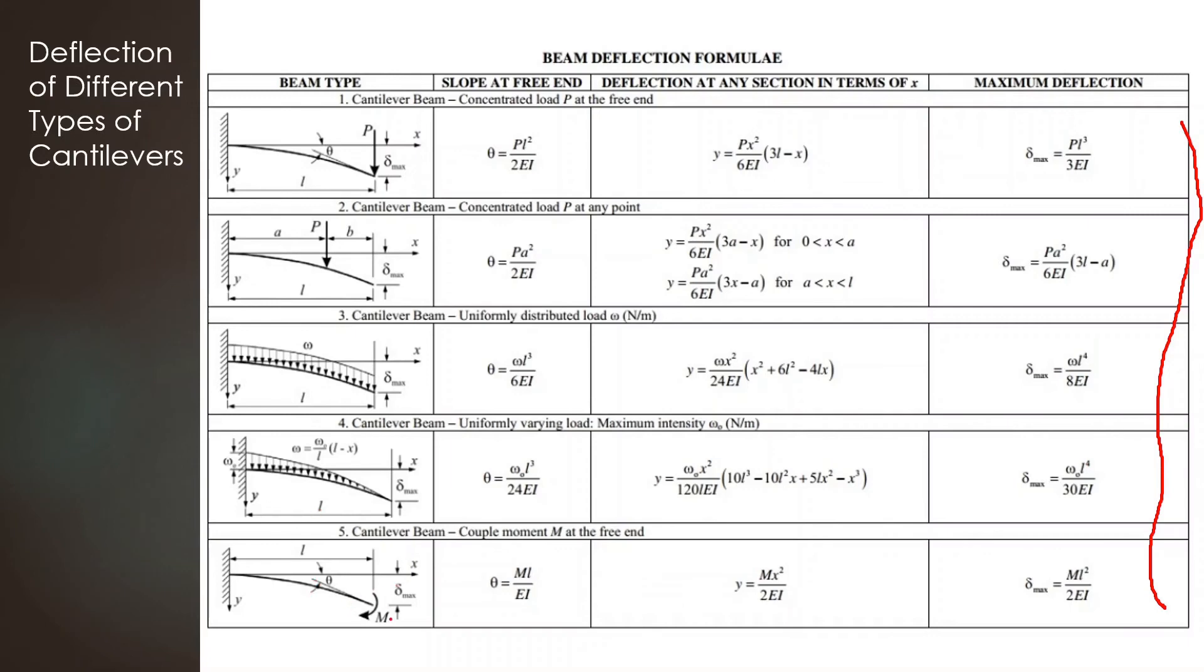If we apply the moment at the edge, if we have different loading conditions, varying loading, uniform load like we discussed, or load somewhere not at the edge, there are different cases. In those cases, we have the method to calculate this deflection. We have the equations given there. You know the parameters, you can substitute them and get the value of the deflection.